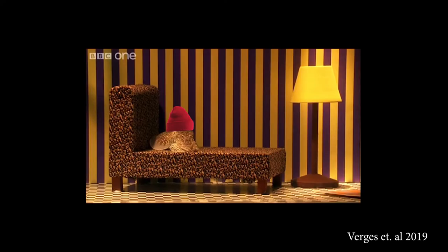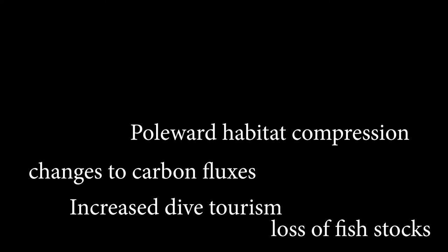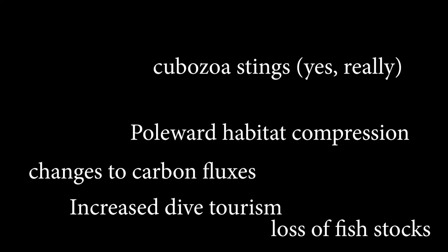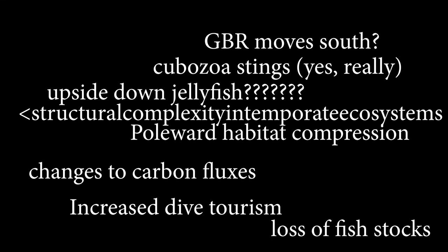And now a quick speed run of all the effects of tropicalisation: increased dive tourism, loss of commercial fish stocks, kelp forest habitat compression, changes to carbon flux, getting stung by a box jellyfish in Sydney, upside-down jellyfish in Lake Macquarie, coral reefs escaping coral bleaching, and greater structural complexity in temperate ecosystems.